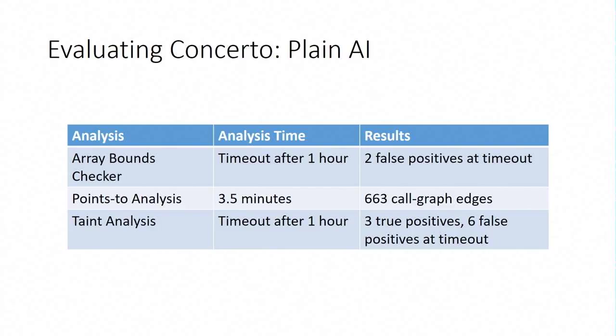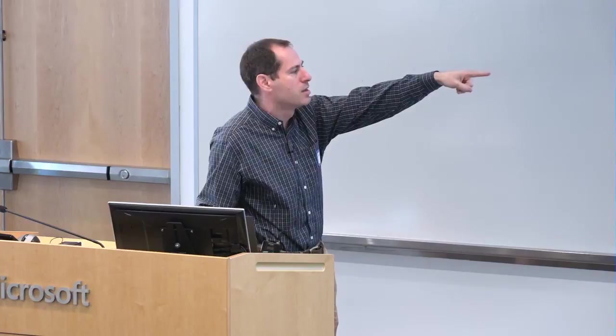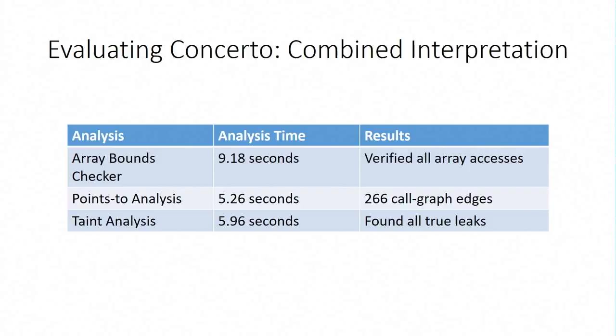If you just use plain old abstract interpretation for everything, in two out of three cases, we don't even finish in an hour. In the other case, we finish in three minutes, but we've got a whole bunch of call graph edges, especially compared to running with Concerto, under ten seconds, right? And two-thirds fewer call graph edges. Just much, much more precise.